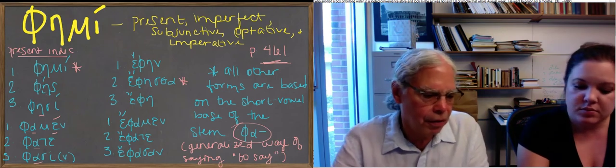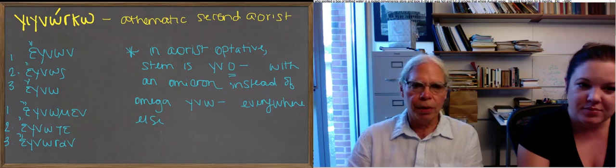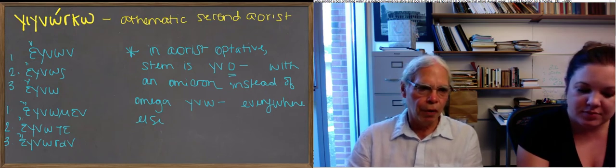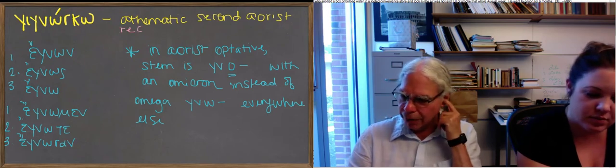All right. Let's move on to the other funky verb form. This is the verb gignosko. This is a reduplicated present with a ske, sko suffix. The root is gno,